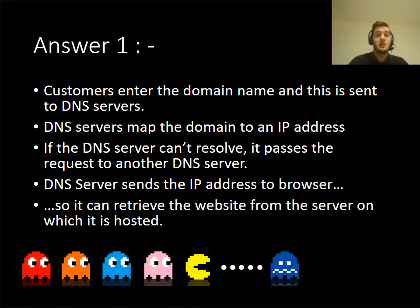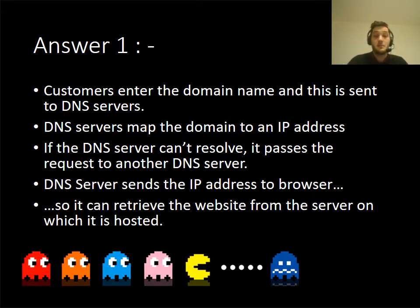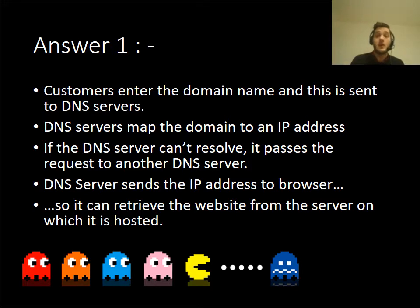To get the marks, you need to acknowledge that the customer enters the domain name — it could be Google.com. Then the DNS server needs to look up that IP address, like a database. If the DNS server can't find it, it goes to another DNS server to try and find that information. Then the DNS server sends the IP address to the browser so it can retrieve and load up your web page. Explain that step by step.